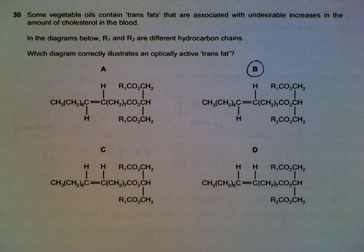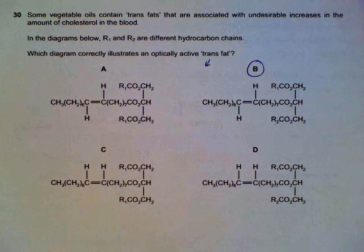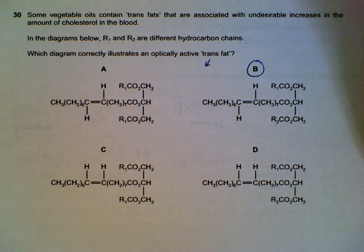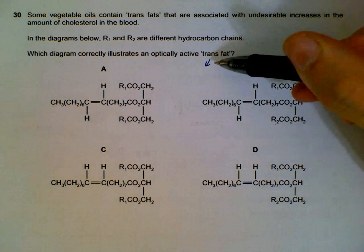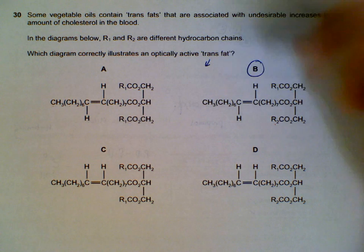Question 30: Vegetable oil contains trans fats, and we are expected to see which one of the four is actually a trans fat and is optically active. The trans here is in the sense of whether it sits trans, so we have to look for one that is a trans isomer and then check whether it has a chiral carbon.